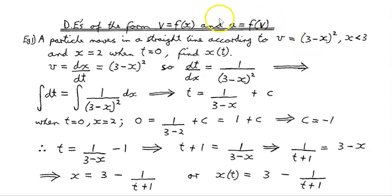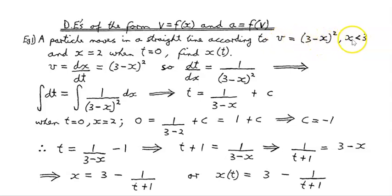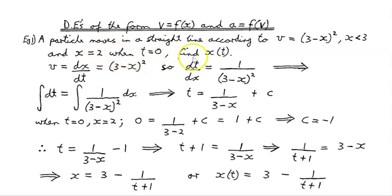A particle moves in a straight line according to v, the velocity, equal to (3 minus x) all squared, for x less than 3. We're given that when x equals 2, that occurs when t equals 0, so we want to find the position function.